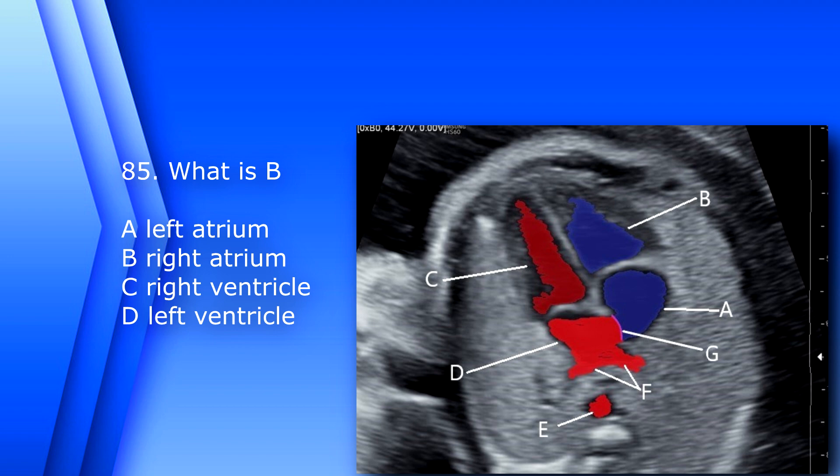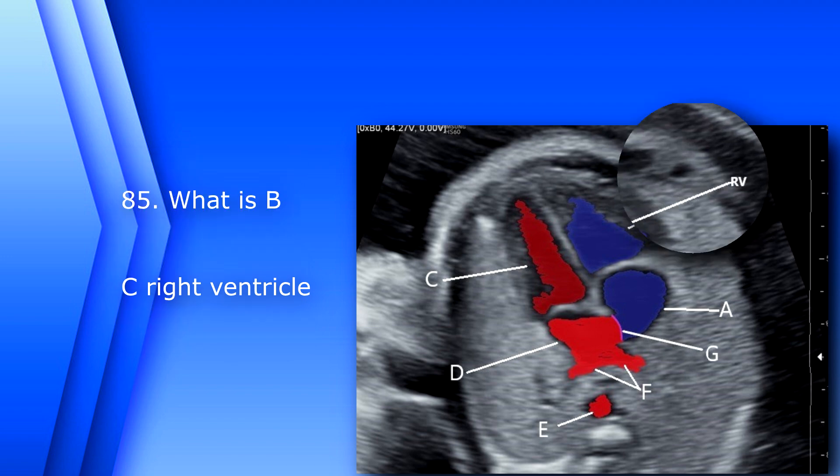Question 85. What is B? A. Left atrium. B. Right atrium. C. Right ventricle. D. Left ventricle. The answer is C, right ventricle.